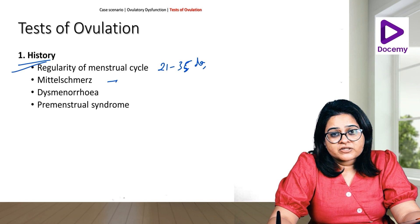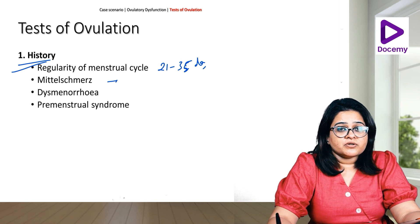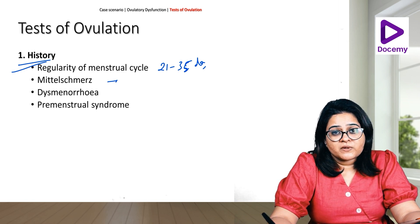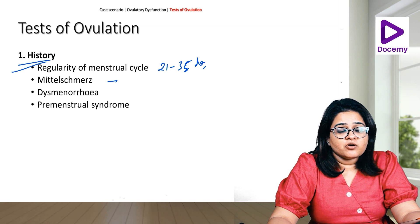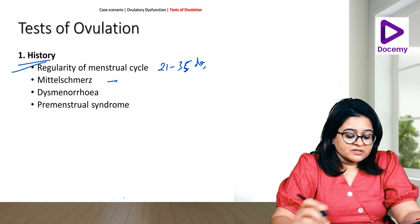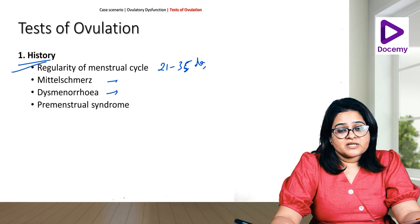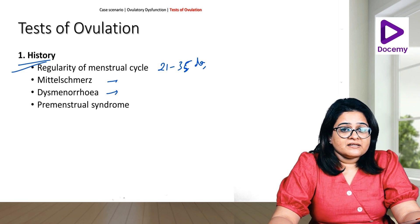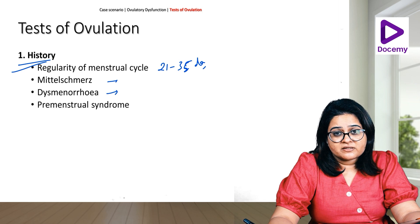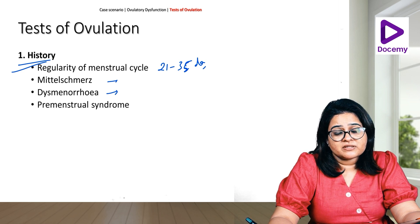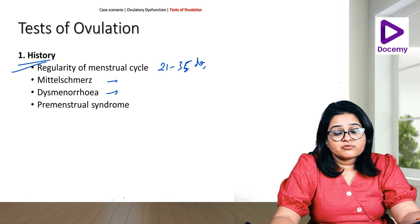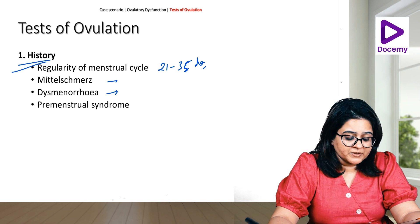What is mittelschmerz? During ovulation, some women have slight pain on one side — whichever ovary is ovulating, that side she will have a sharp stabbing pain. This is very common in many women and is called mittelschmerz. Dysmenorrhea — pain during periods — is again indirectly a sign of an ovulatory cycle. Women who have anovulation or oligo-ovulation usually do not have much dysmenorrhea; they will have periods every three to four months but without abdominal pain.